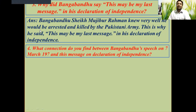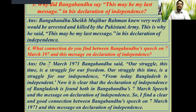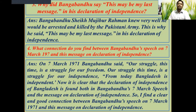What connection do you find between Bangabandhu's speech on 7th March 1971 and his message on the declaration of independence? On 7th March 1971, Bangabandhu said: 'Our struggle this time is a struggle for our freedom. Our struggle this time is a struggle for our independence. From today, Bangladesh is independent.' It is clear that the declaration of independence of Bangladesh is found in both Bangabandhu's 7th March speech and the message on declaration of independence. I find a clear and strong connection between the two.